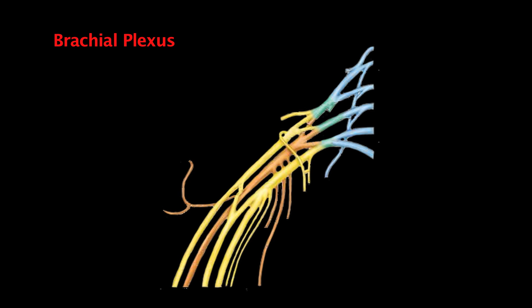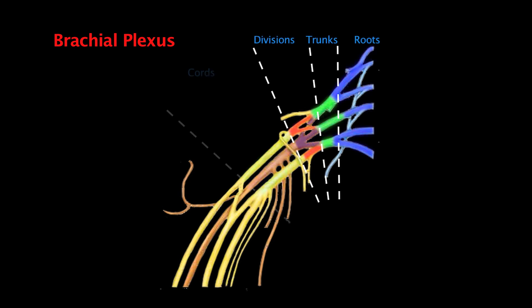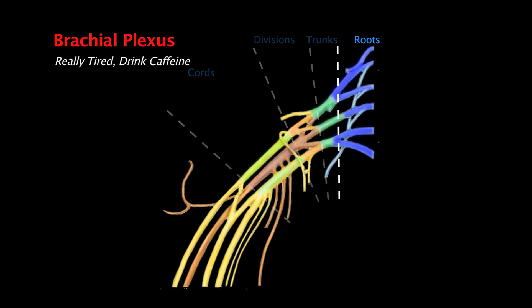The plexus is divided into four sections: the roots, the trunks, the divisions, and the cords. A good way to remember this is the mnemonic 'Really Tired Drink Caffeine,' which gives you roots, trunks, divisions, and cords.